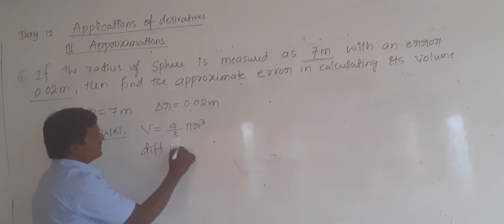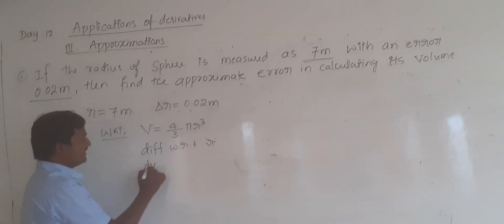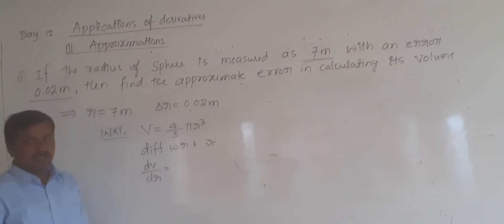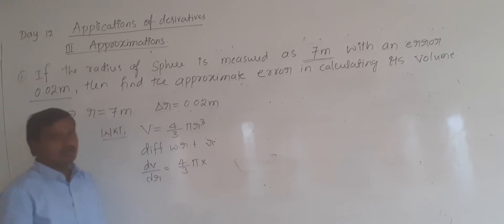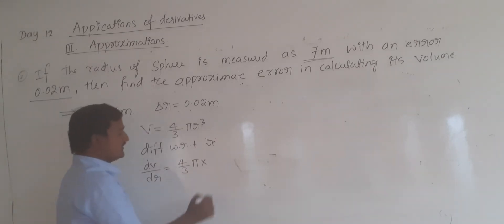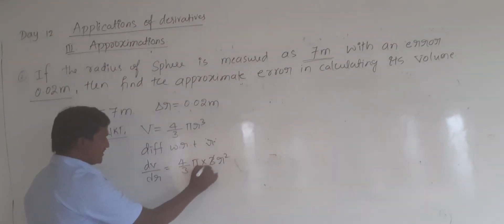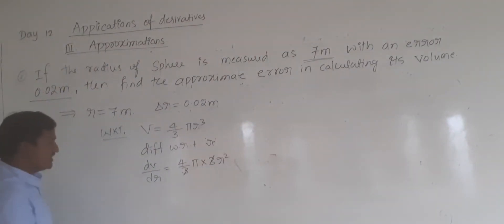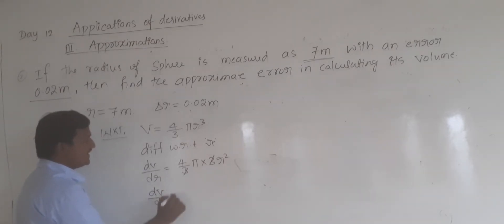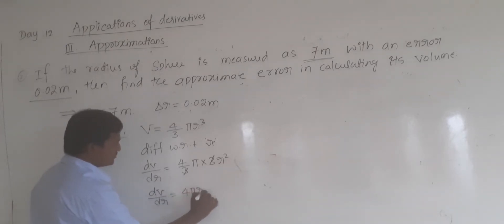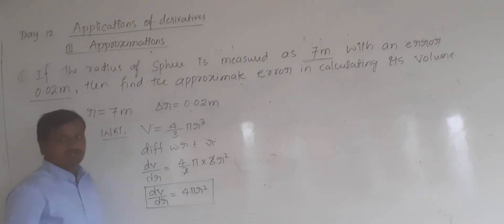Now I am going to differentiate this with respect to r. So dV by dr is equal to 4 by 3 pi into the differentiation of r cubed, which is 3r squared. This 3 and this 3 will get cancelled, so dV by dr is equal to 4 pi r squared. This gives the rate of change of volume with respect to its radius.